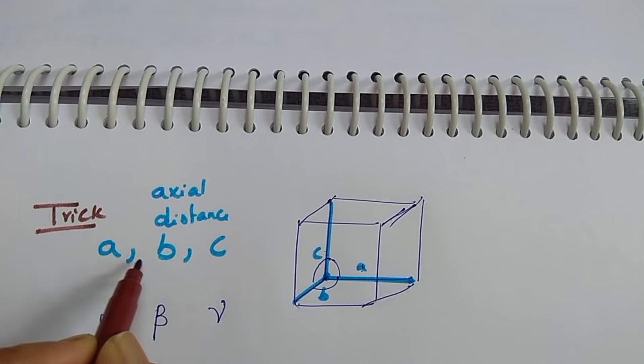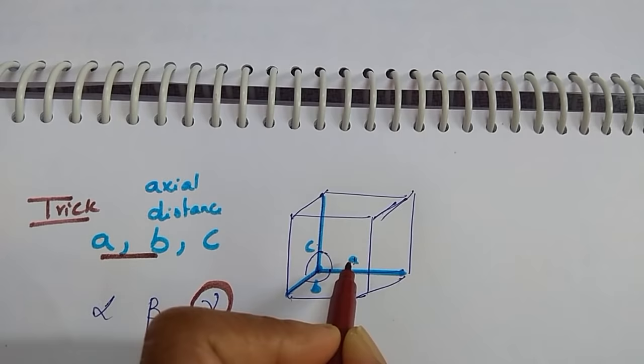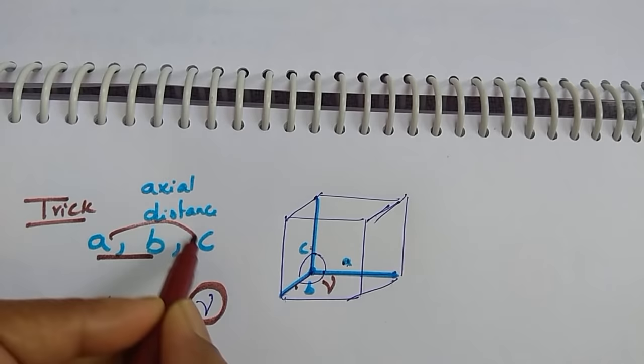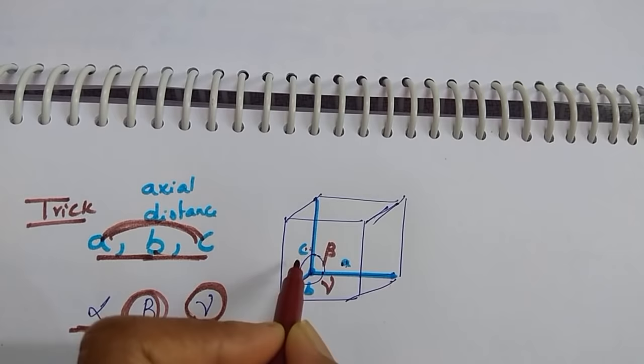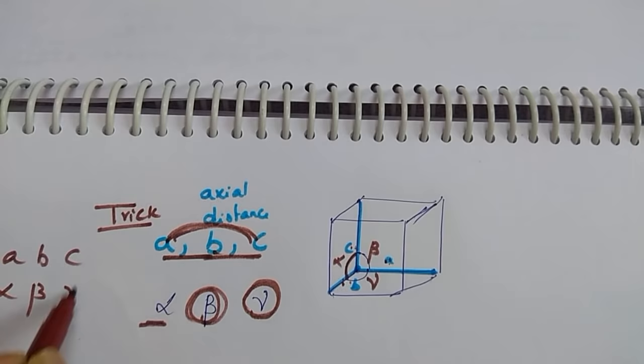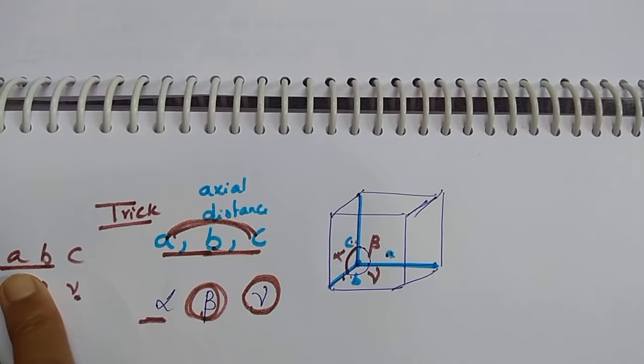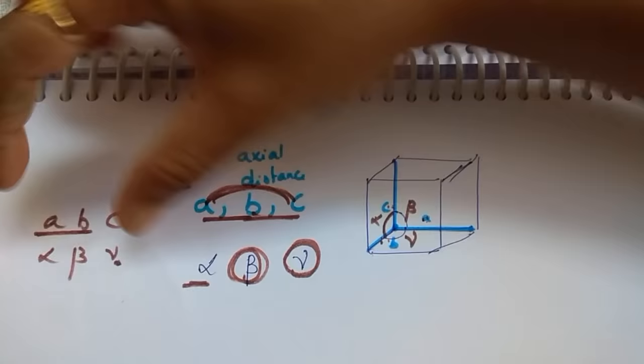Between A and B, the angle you take is gamma. Between A and C, the angle is beta. Between B and C, the angle is alpha. So to summarize: A-B gives gamma, B-C gives alpha, and A-C gives the middle one, beta.